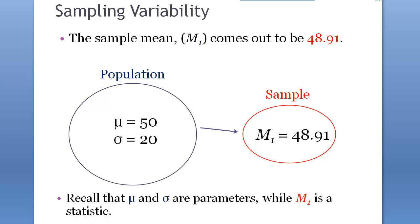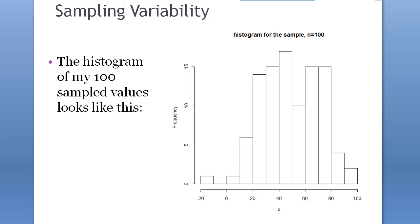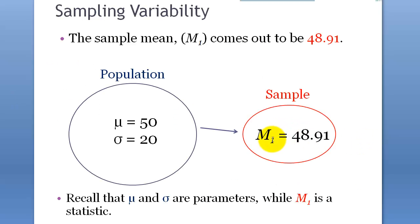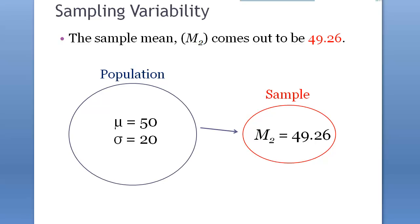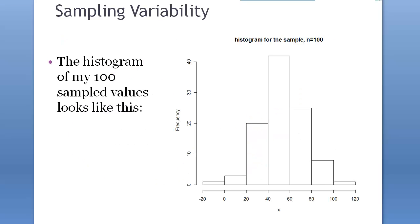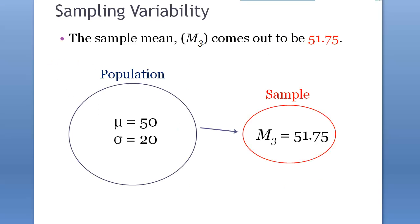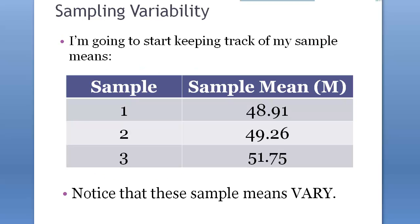Because we are taking the samples from the same population, they have really similar attributes and characteristics even if they are different samples. For instance, the first 100 sample values had a mean of 48.91. The second histogram had a mean of 49.26. And the third example had a mean of 51.75.